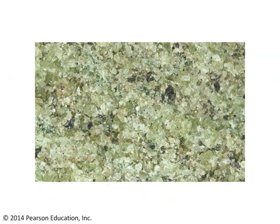If you look at this image, you'll see a rock that's actually one of the most common rocks on Earth. This is peridotite, an igneous rock that's very common in the Earth's mantle. It's made out of a mineral called olivine, mostly, with a little bit of the mineral pyroxene in it as well. Both of these minerals are silicate minerals, and so silicate minerals make up a huge portion of the mantle.